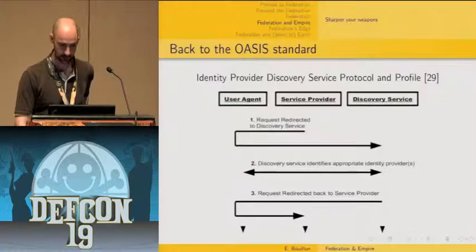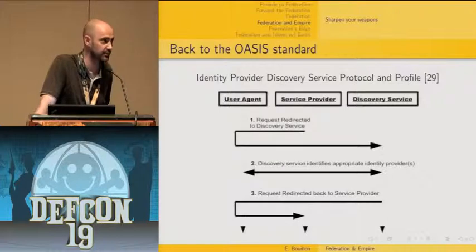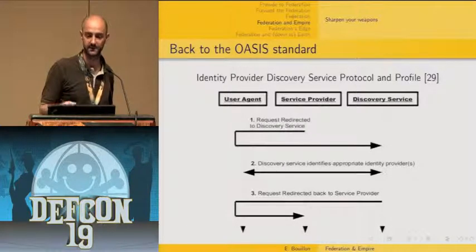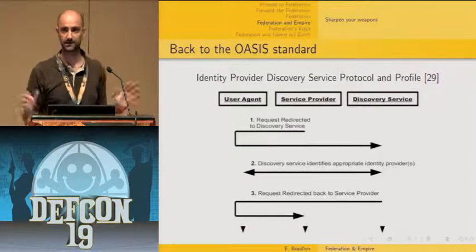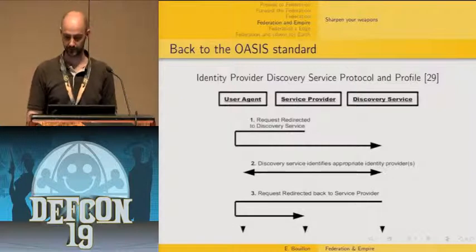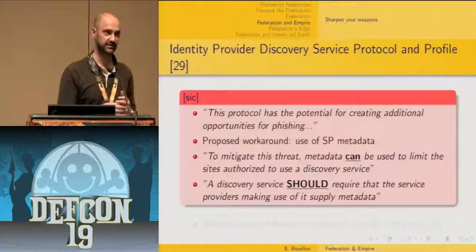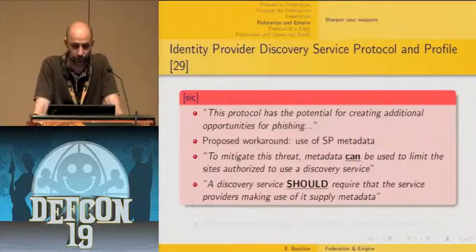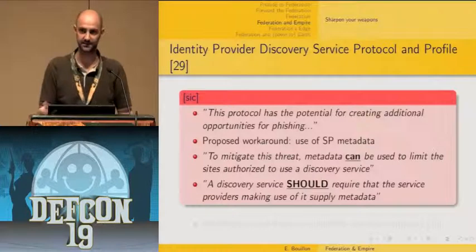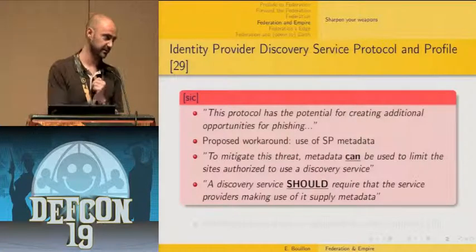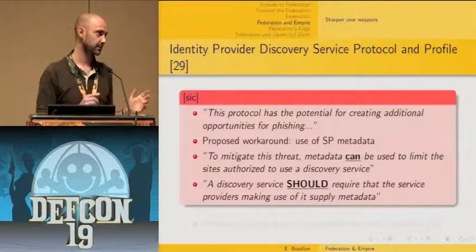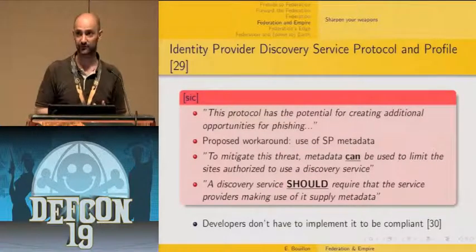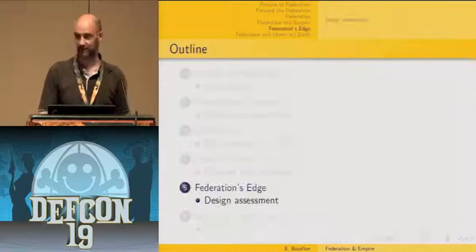The thing is, these vulnerabilities are not implementation issues but specification issues. They come from the identity provider discovery service profile — the open redirection is built into the specification. When they wrote this, they acknowledged the issue: the specification states 'this protocol had the potential for creating additional opportunity for phishing.' They proposed a workaround based on service provider metadata, but it's only a should — they don't explain how to exchange metadata between the service provider and the discovery service. So developers implement the standard correctly and still get a vulnerability.